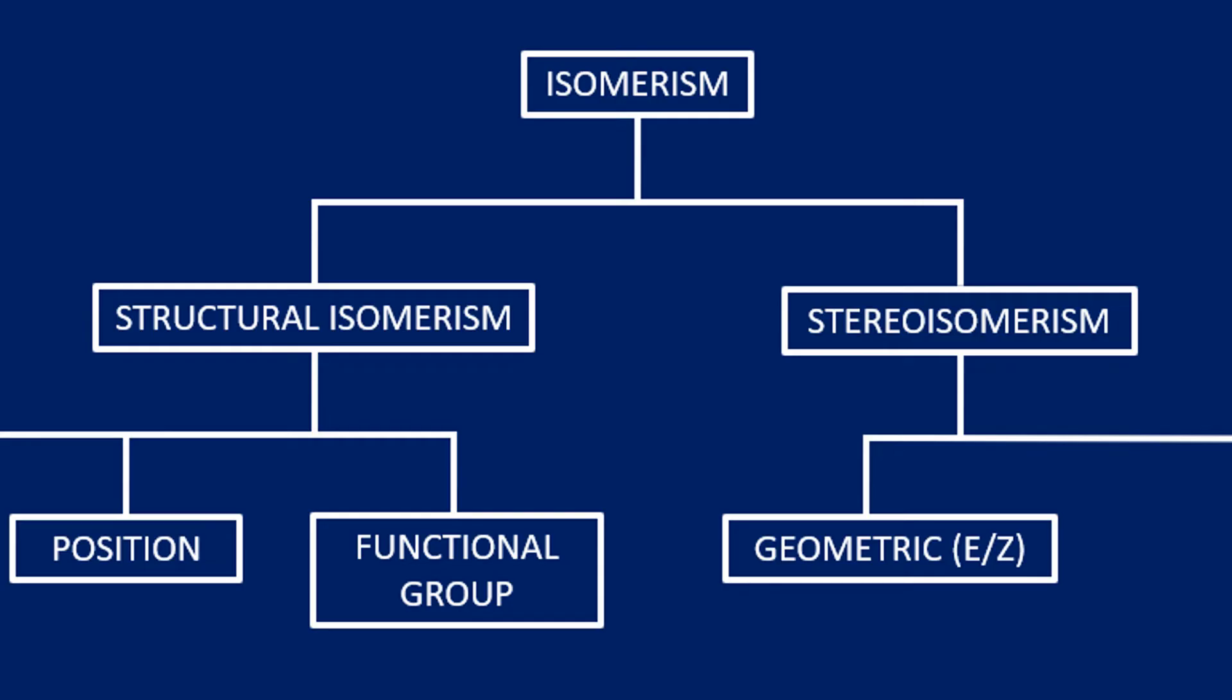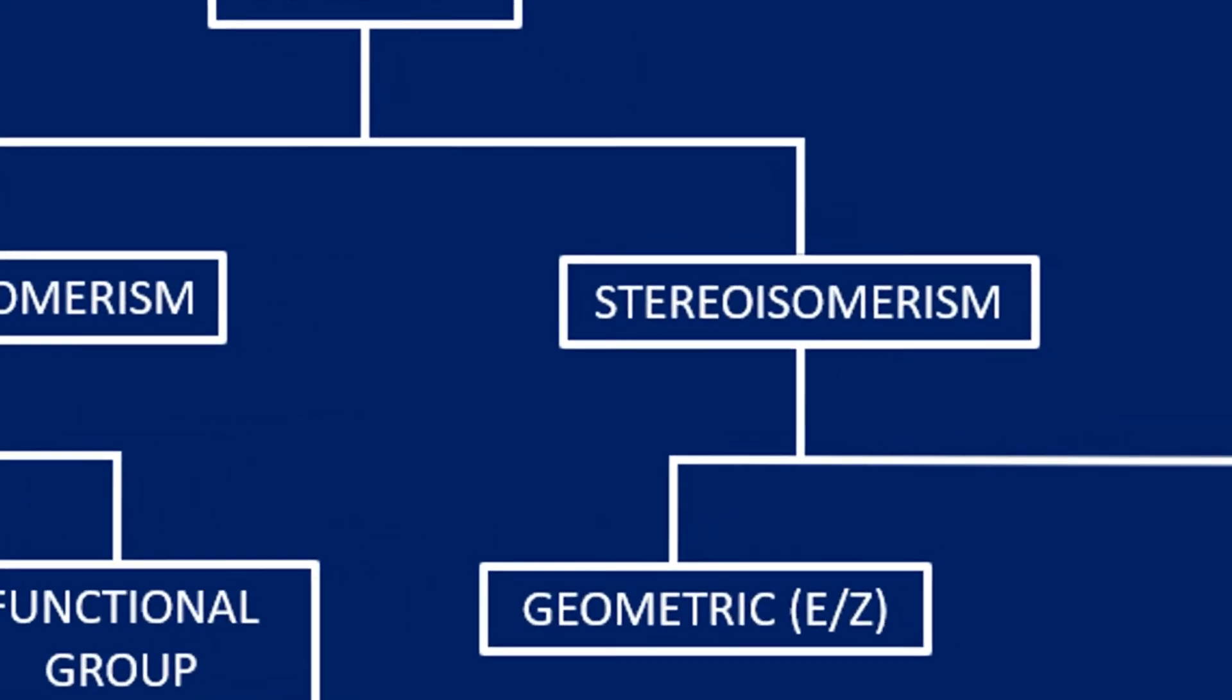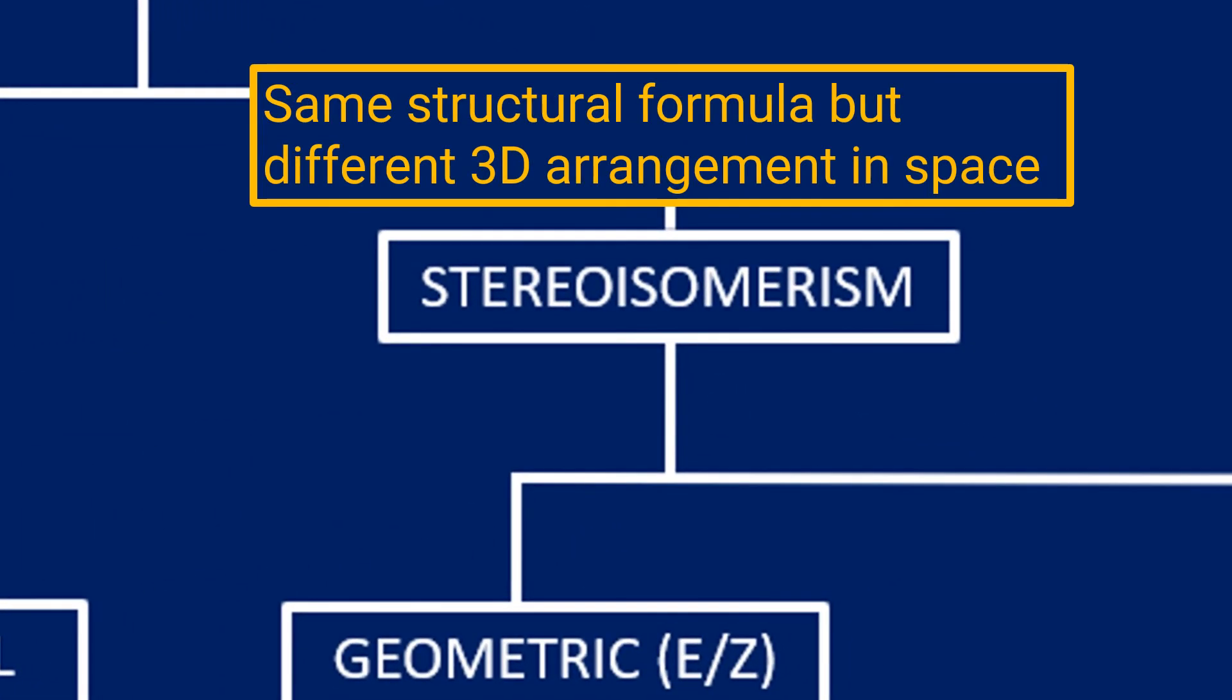So back to the beginning then—we've covered the three types of structural isomer. We now need to look at the stereoisomerism.